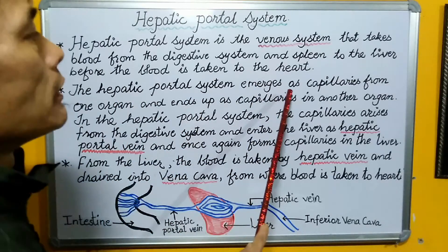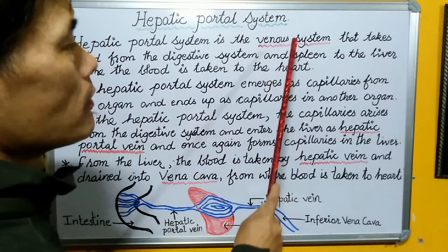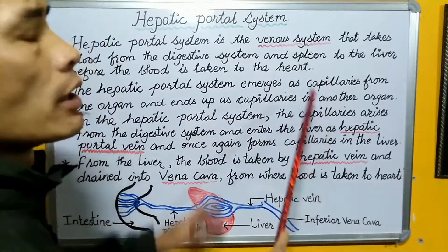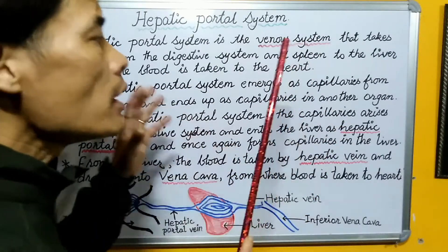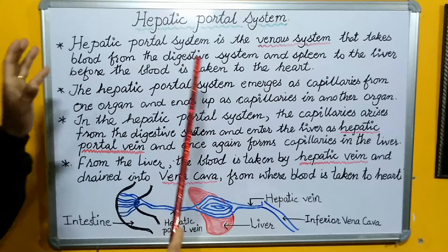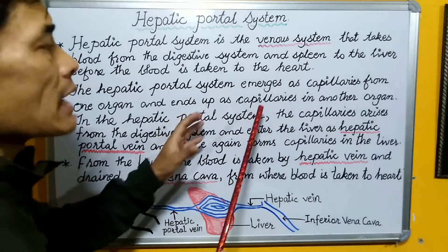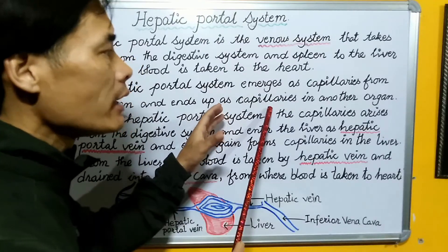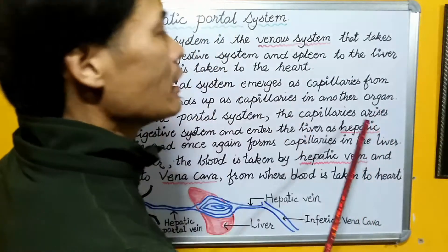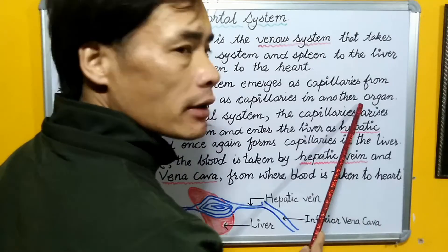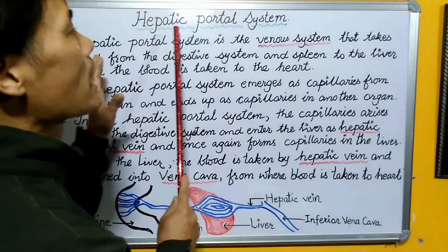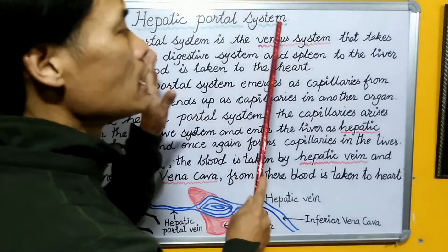In the hepatic portal system, the venous system is emerging as capillaries from the digestive system, and it is ending up as capillaries once again in the liver. That is the reason the term used is hepatic portal system.